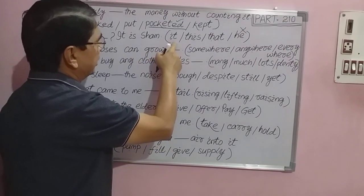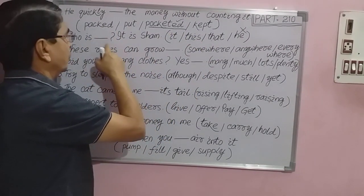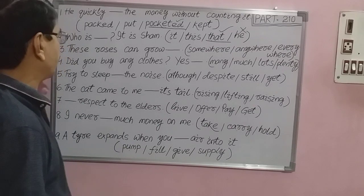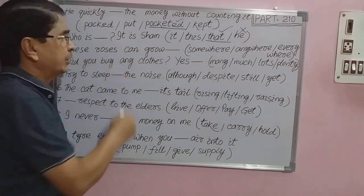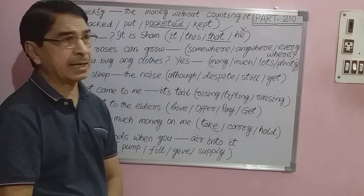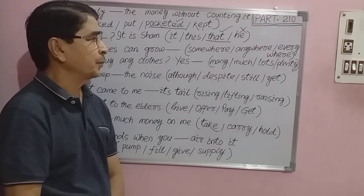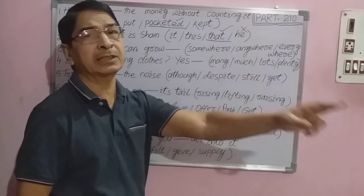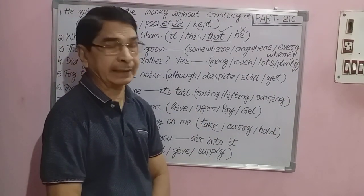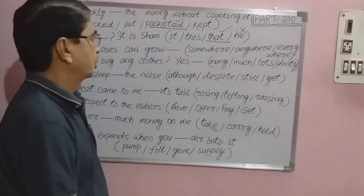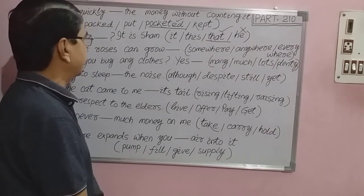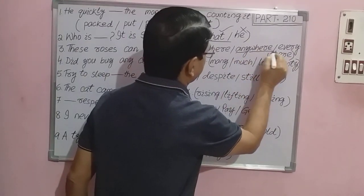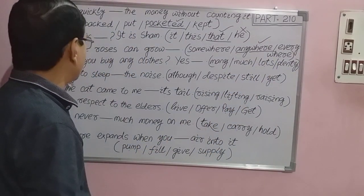Question number three: 'These roses can grow ___.' Options: A) somewhere, B) anywhere, C) everywhere, D) nowhere. The appropriate word here is 'anywhere' — these roses can grow anywhere. That is your answer.